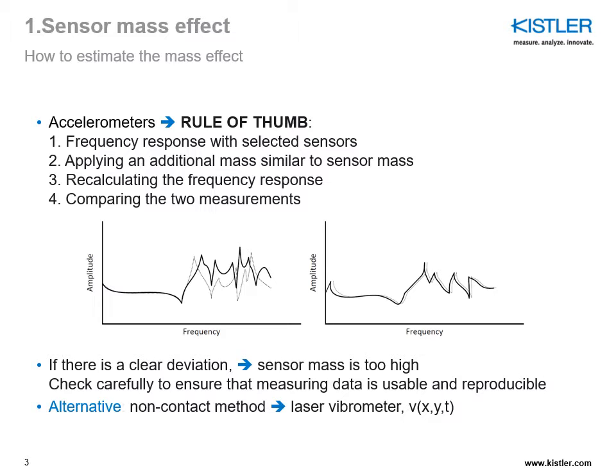Another alternative, if the sensor mass is too big and cannot be reduced, is to go for a non-contact method, such as a laser vibrometer as discussed in the first part. In the next slide, there is a small movie showing a very simple basic demo to show how this resonance frequency can change due to the mass of the sensor.